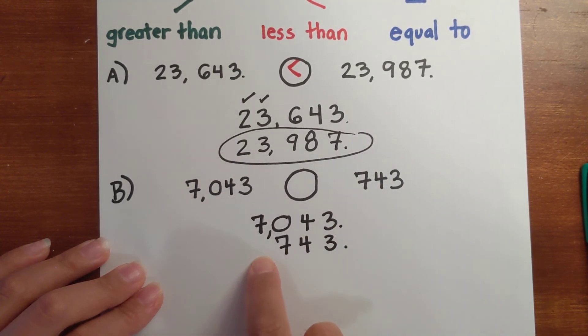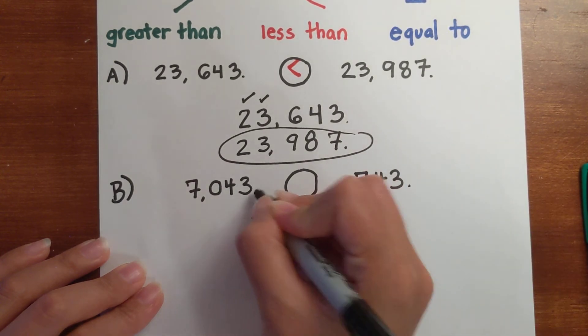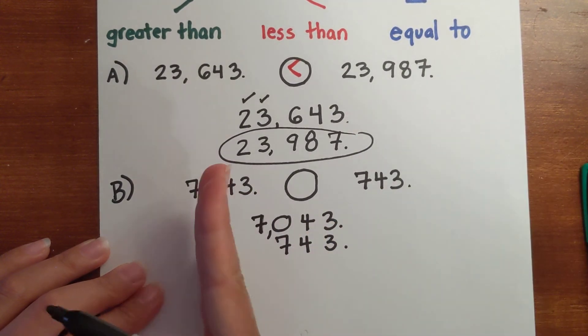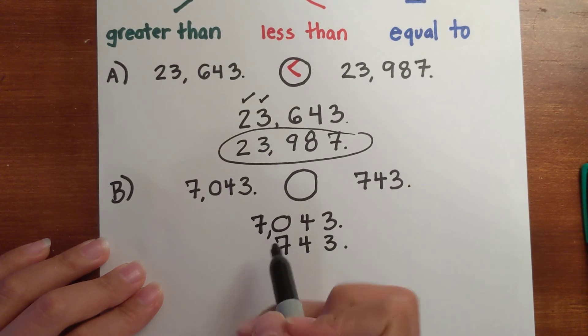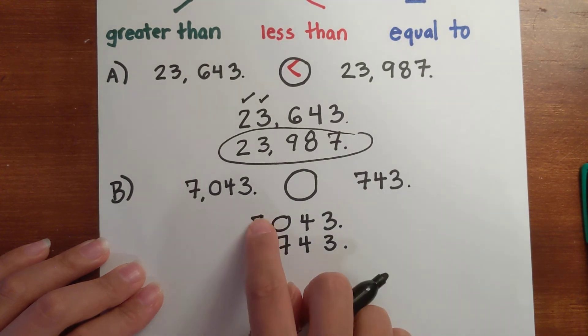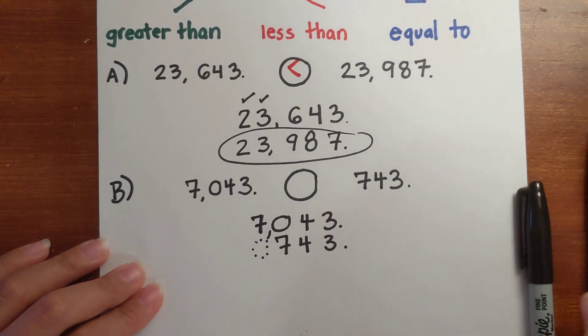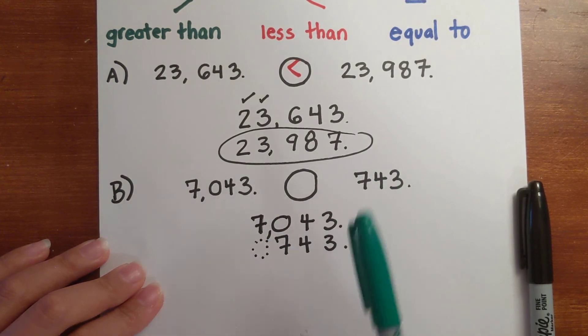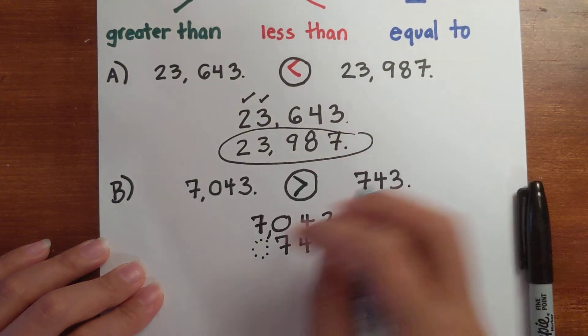Now notice I didn't start writing the seven right here because I need to line up my place values. Here's my decimal to represent the ones on the left-hand side. Remember, you always start with the larger place value first. So seven compared to zero really, 'cause there's no thousands in this value. So seven is greater than zero. I can automatically say, like we thought before, that 7,000 is greater than no thousands. So 7,043 is greater than 743.